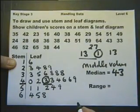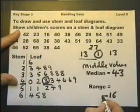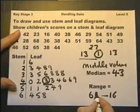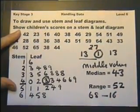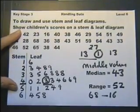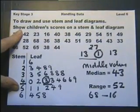The range is the lowest value, which is 16, taken away from the highest value, which is 68. So therefore, we can work out the range. So a stem and leaf diagram is often used to work out the median, because we can put the numbers in order.